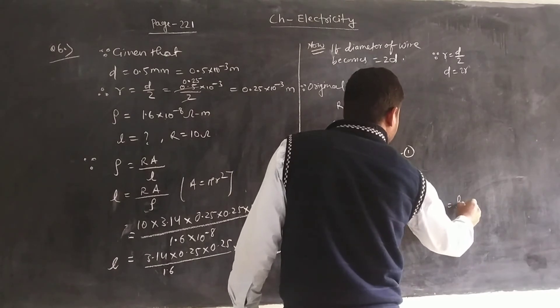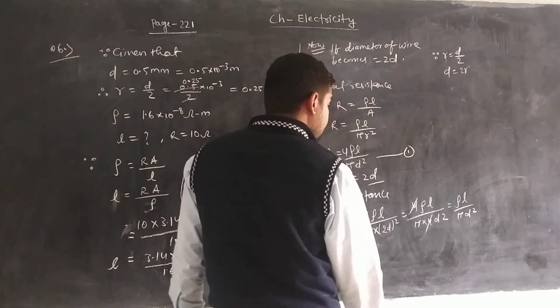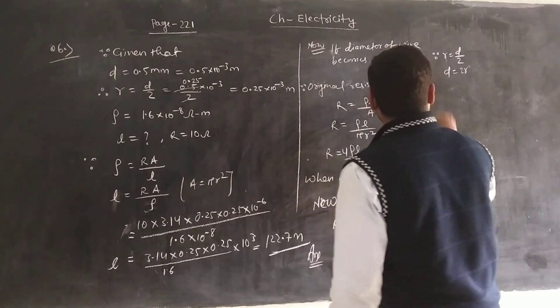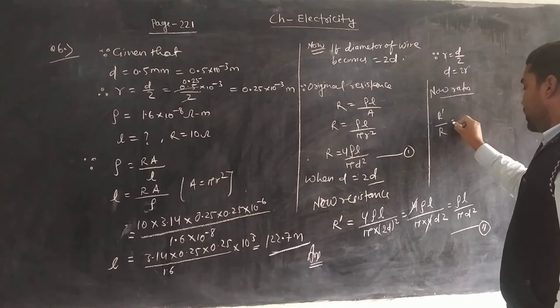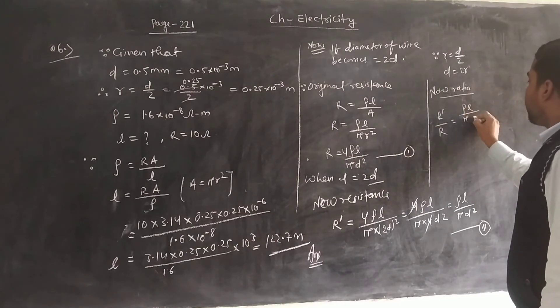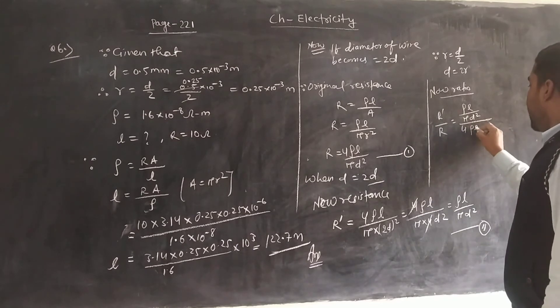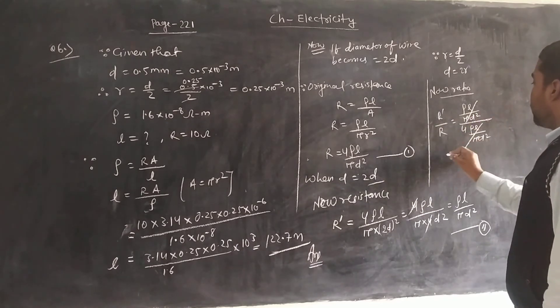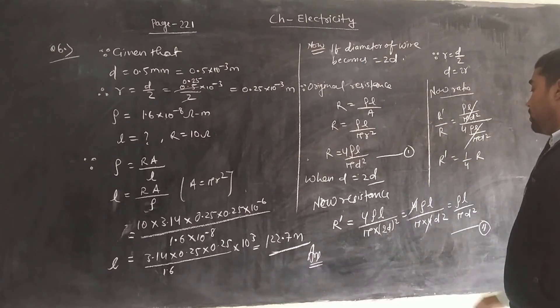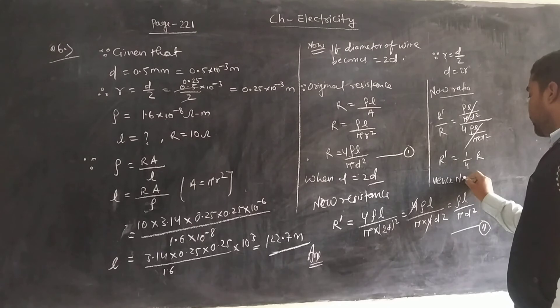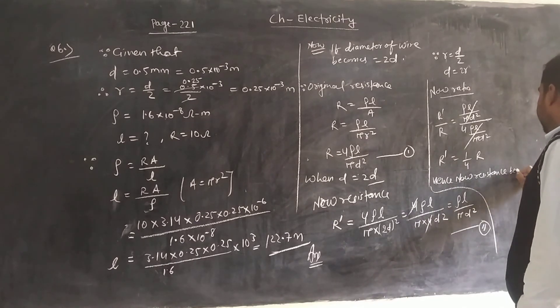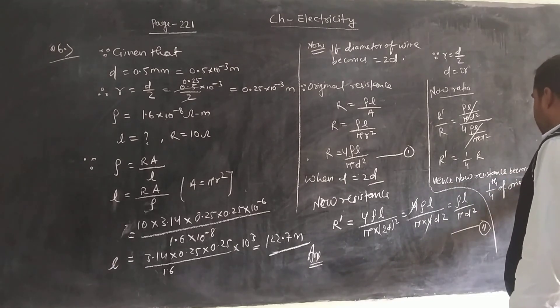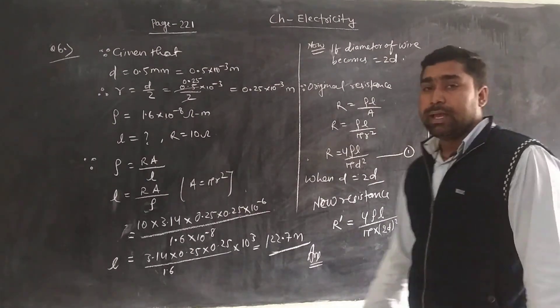Dividing new resistance by original resistance gives rho L by pi D square divided by 4 rho L by pi D square, which equals 1 by 4. Hence new resistance becomes 1 by 4th of the original.